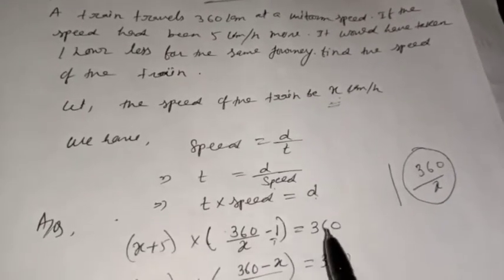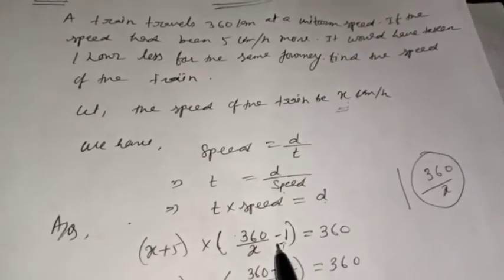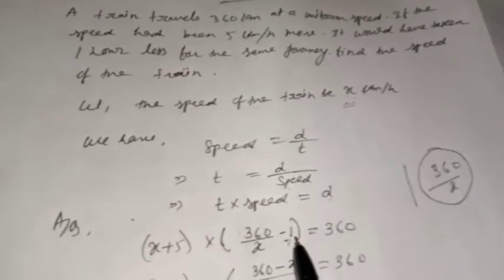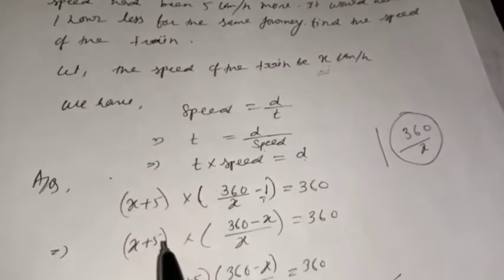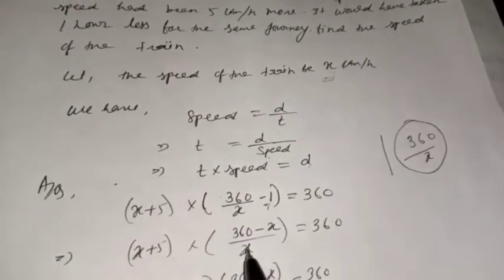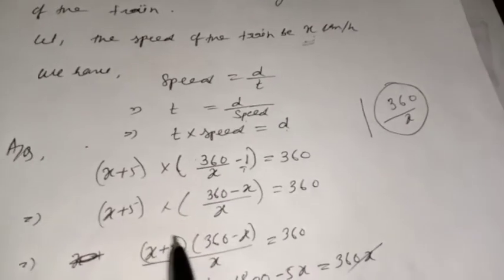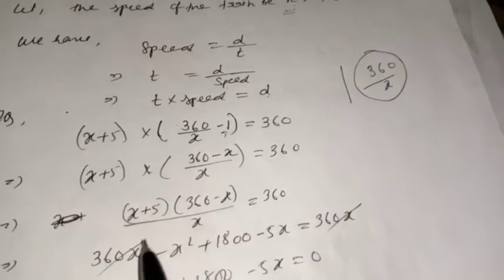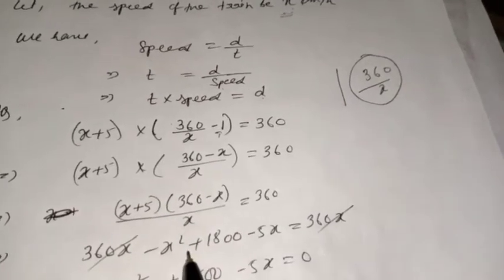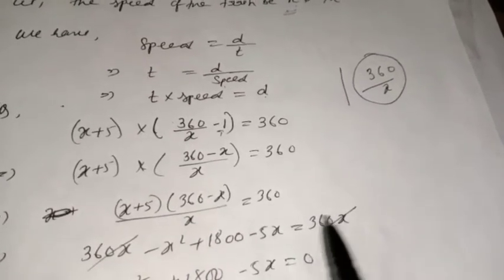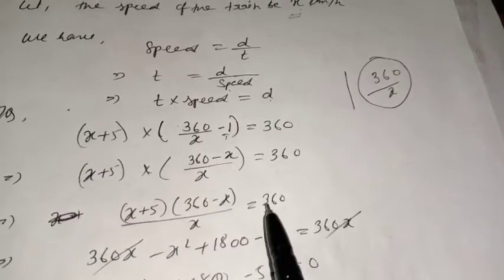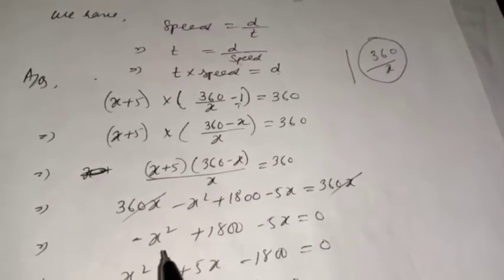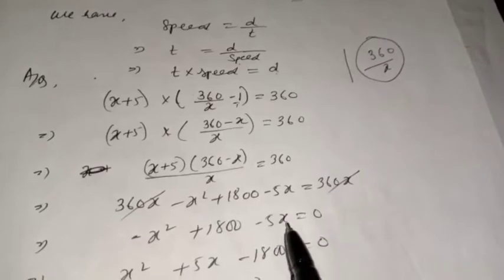They covered the same distance; speed changed by 5 km/hr more and time is one hour less. Taking x as LCM: (x+5) × (360−x)/x = 360. Multiplying out: 360x − x² + 1800 − 5x = 360x. After cross-multiplying, 360x cancels, leaving −x² + 1800 − 5x = 0.